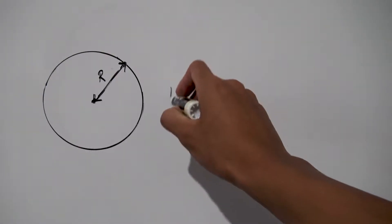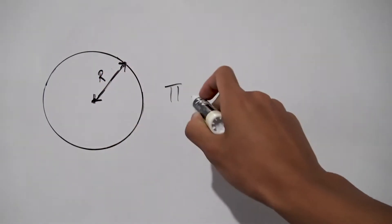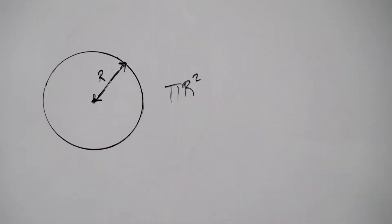Alright, hello everybody and today we're going to be having a look at the area of a circle. So we all know the area of a circle is nothing but pi times the radius of the circle, squared.